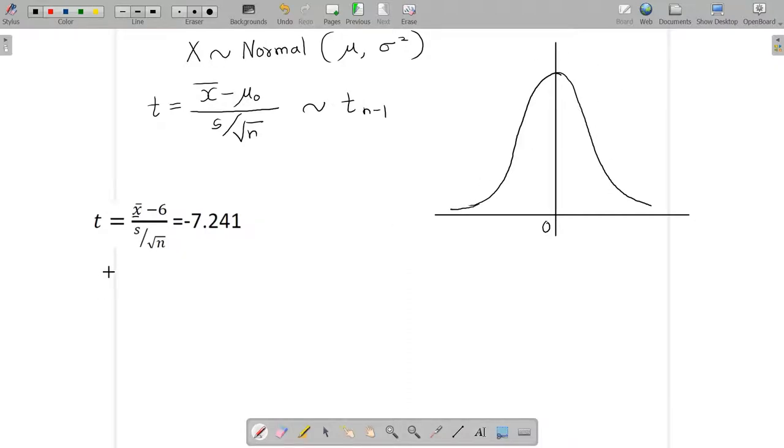In our problem, n was 30, so obviously degrees of freedom will be 29, which is n minus 1 degrees of freedom. So assume that this is the curve of t29.